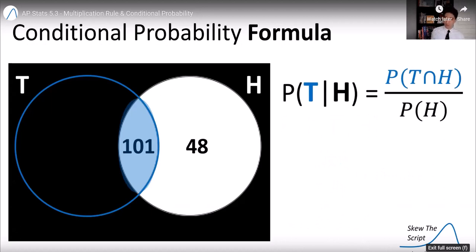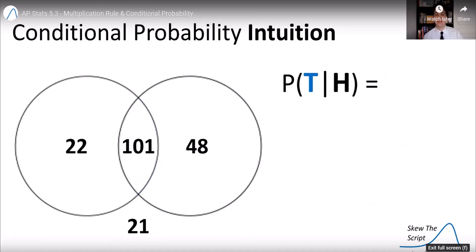Now this brings us to the formula for conditional probability. The probability of tall, given high income is the probability of both divided by the given. And that was, in our case, 101 divided by 149. Now, I don't want you, as I said in previous lessons, using these formulas too much.